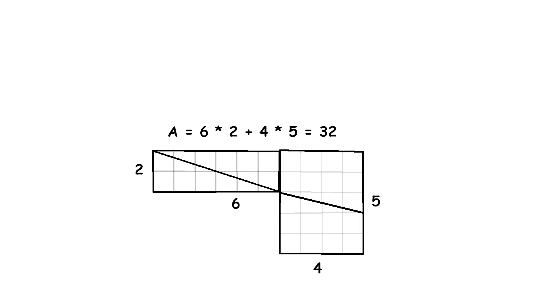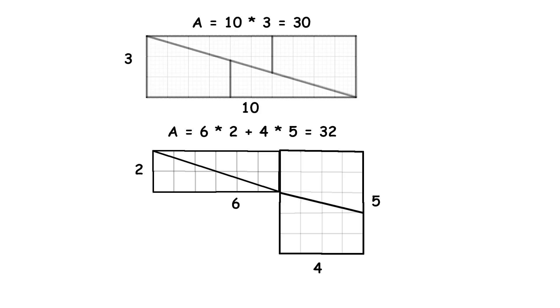You carefully cut this shape into 4 smaller pieces. These pieces are specifically designed to fit together in a new way. Now you take these 4 pieces and rearrange them to form a rectangle. When you look at this new rectangle, it seems to cover only 30 square units instead of the original 32. It looks like 2 square units have disappeared.